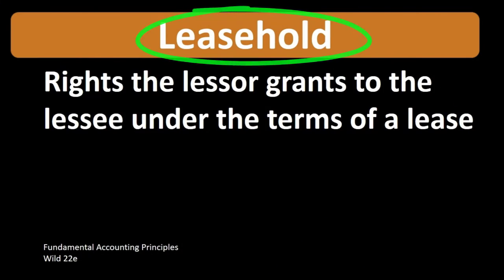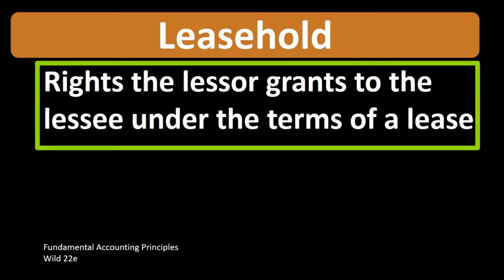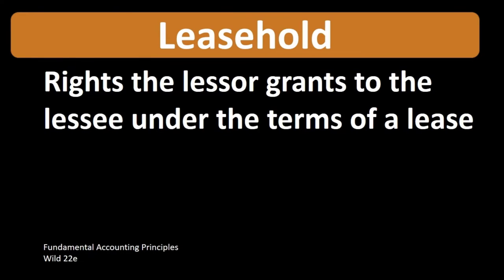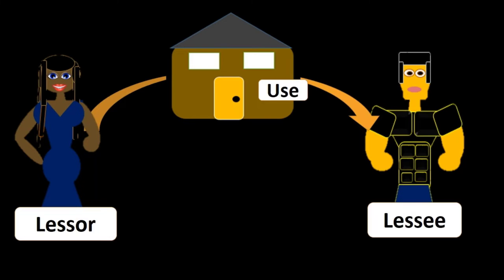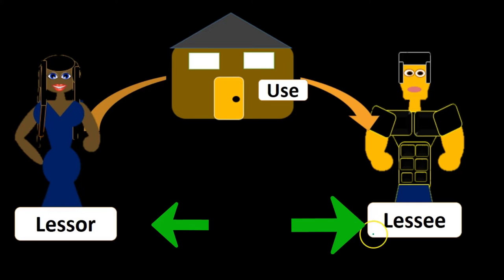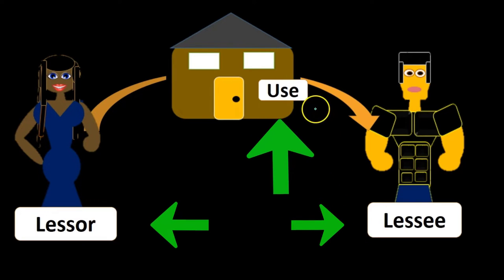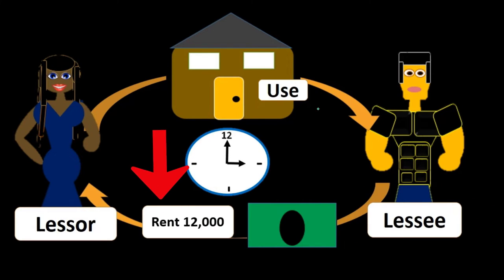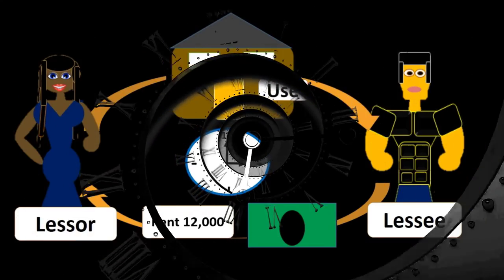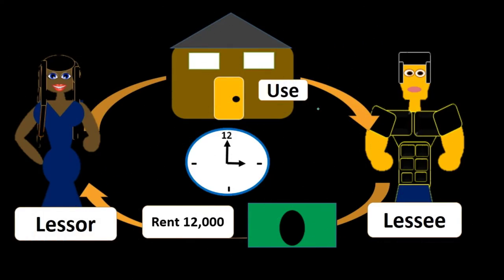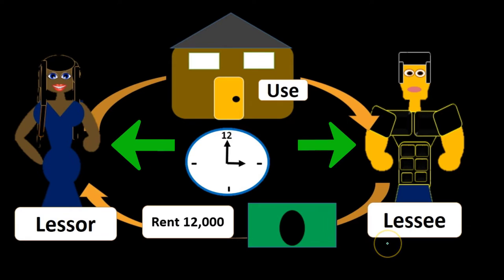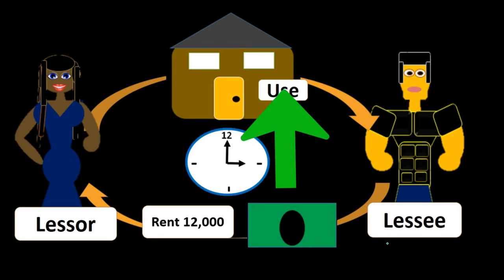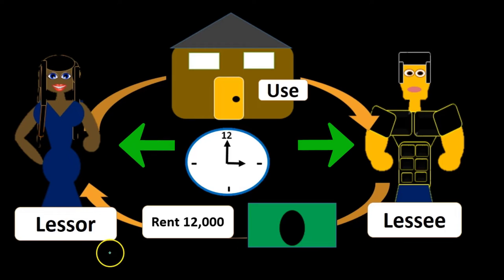The idea of the leasehold are the actual rights the lessor grants to the lessee under the terms of the lease, which generally will include the use of the property in the lease. So if we have this piece of property, the leasehold is the granting from the lessor to the lessee of the use of this property for a certain time period in exchange for rent for that time period. As that time period passes, the rent will be accumulating going from the lessee to the lessor. At the end of the term of the lease, the property will revert back from the lessee to the lessor.